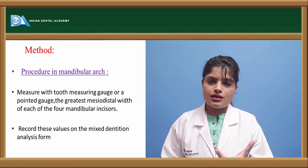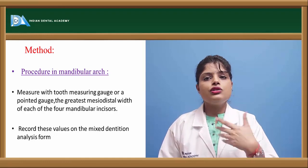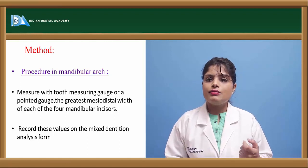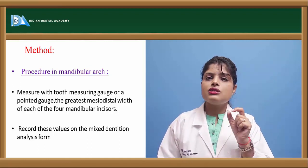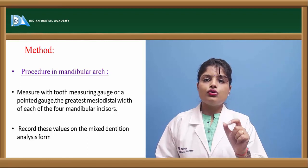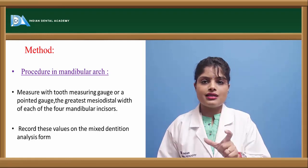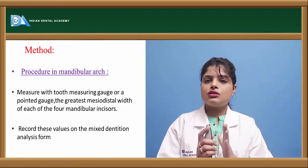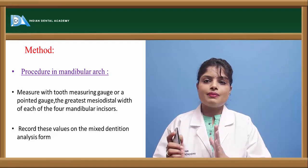In the method underlying this mixed dentition analysis, first we take the cast and measure the mesiodistal widths of all the maxillary or mandibular teeth. For example, considering a mandibular arch, we take the mesiodistal dimensions of the central and lateral incisors. These mesiodistal dimensions are taken from the middle third of the tooth, which corresponds to the greatest dimension. We calculate this width using a Boley's gauge, then add all the mesiodistal widths of the teeth on one side.